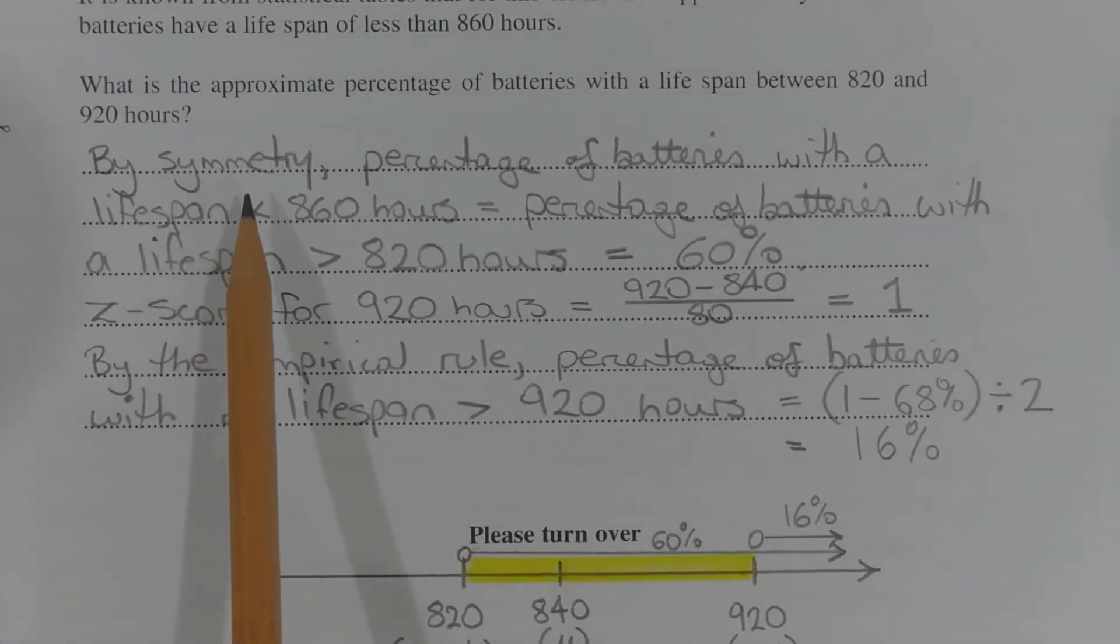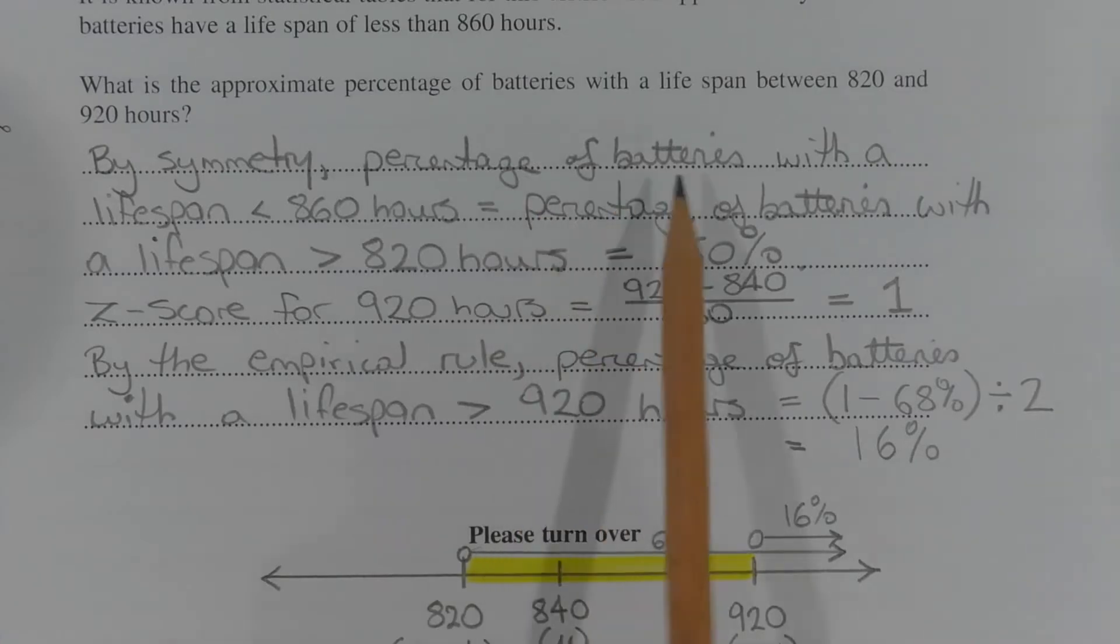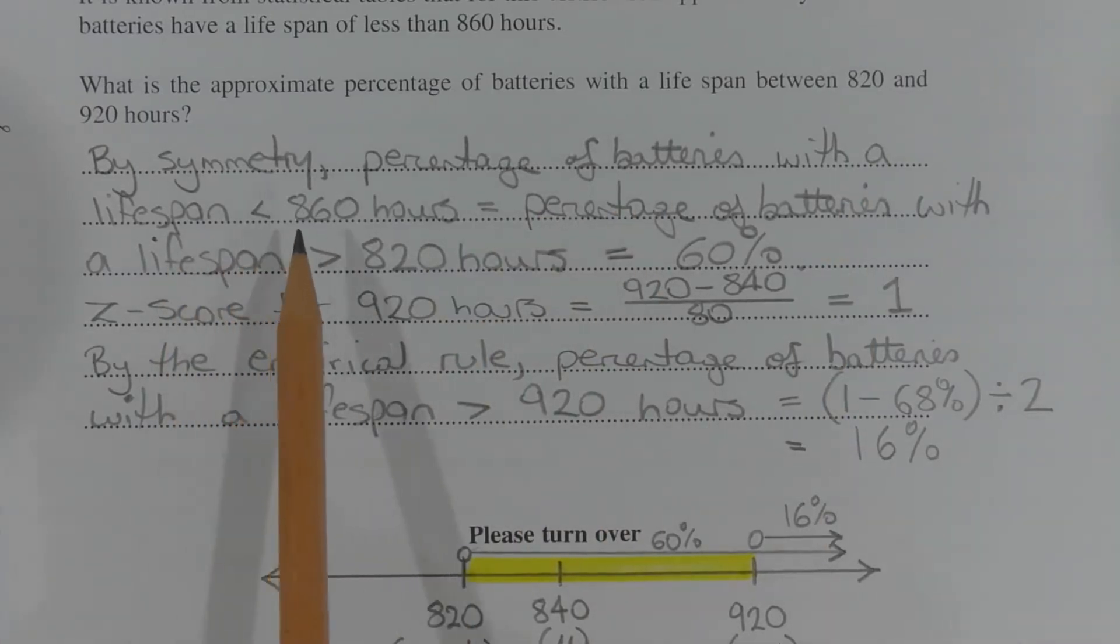By symmetry of the normal distribution, the percentage of batteries with a lifespan less than 860 hours, which is 20 hours above the mean, is equal to the percentage of batteries with a lifespan greater than 820 hours, which is 20 hours below the mean, and that equals 60%.